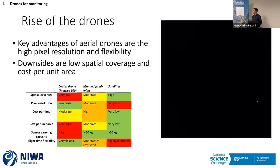Manned fixed-wing aircraft kind of fit in between drones and satellites. The real key advantages of drones are the extremely high pixel resolution, which only goes up the lower you fly to the ground. But there's a trade-off with the cost of covering area — the greater the area you want to cover, essentially the higher you have to fly, and the lower your pixel resolution. The other key benefit is the flexibility of use: it's relatively simple to time your drone flights to get specific weather characteristics or target specific events.